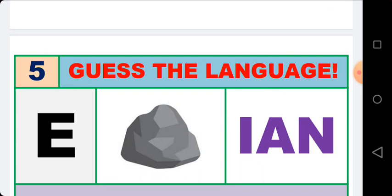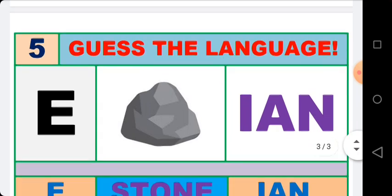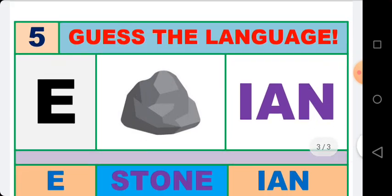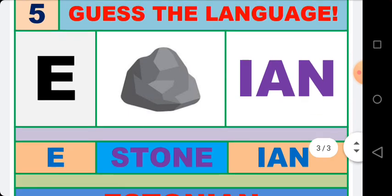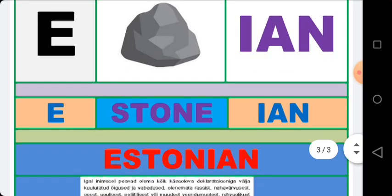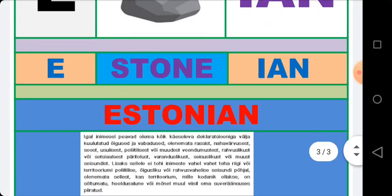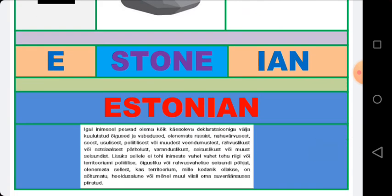Time is over. I'll give you the hint. In the middle you see the emoji of stone — E, stone, I, A, N. So the language is Estonian. Estonian is the language spoken by the people of Estonia. You can see the Estonian language written.